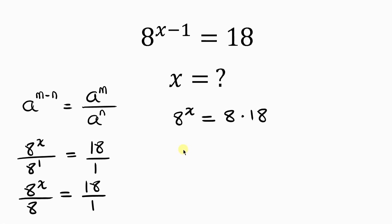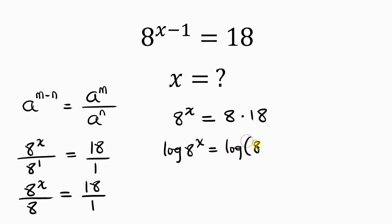Our next step will be to take the log of both sides, since the unknown is an exponent. So we take the log of the left: log 8 to the x. This is equal to the log of the right-hand side: log of 8 times 18.